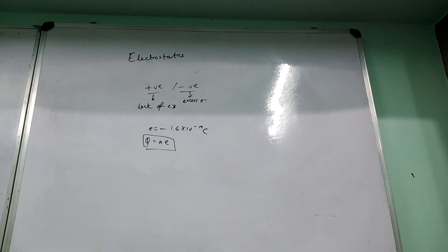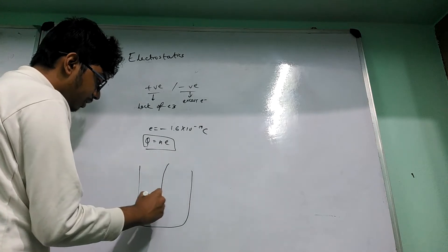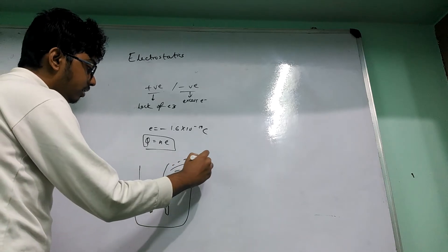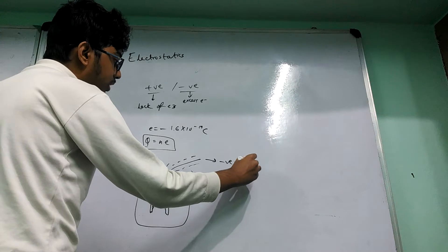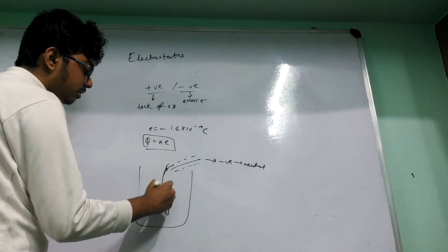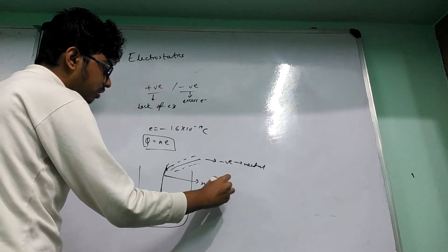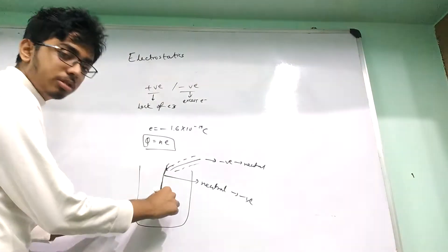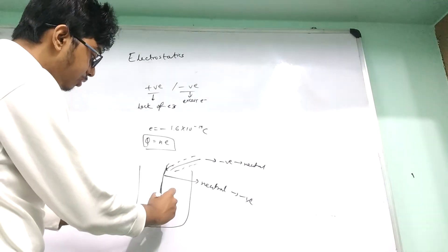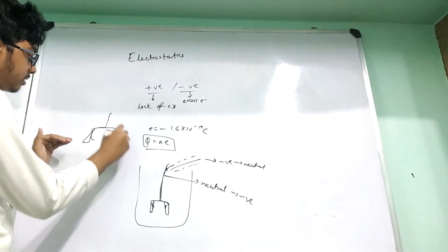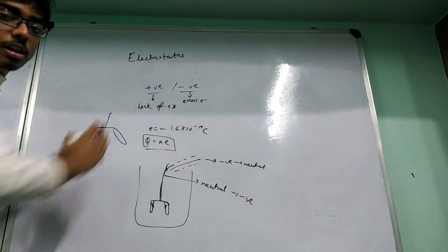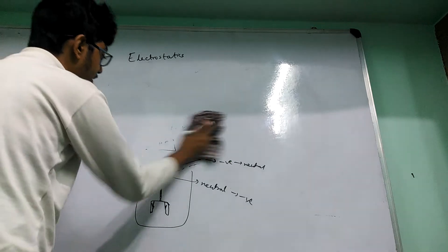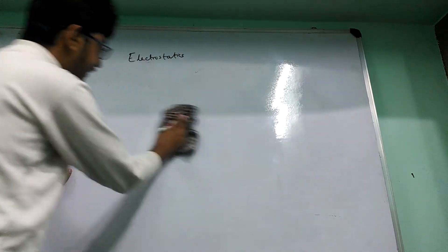Next is the electroscope. It's a very basic idea. Suppose you have a gold leaf electroscope. Here we have two gold leaves. Suppose we bring a negatively charged wire — negative charges will be transferred to this, and this will become negatively charged. The negative charges will come to both plates, and these two plates will repel one another — they spread apart. This is how the electroscope works. We all know those experiments like rubbing a comb and attracting small pieces of paper.